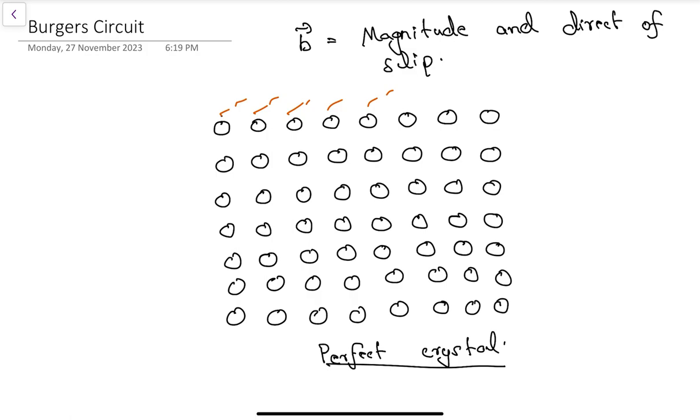Let me start the circuit from here. I am going in the right direction 1, 2, 3, 4, 5. And downward also I have moved 1, 2, 3, 4, 5.